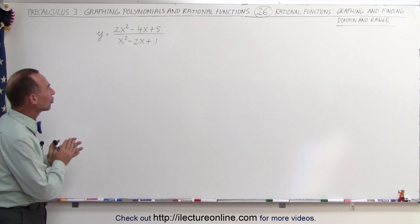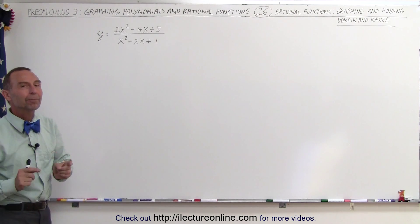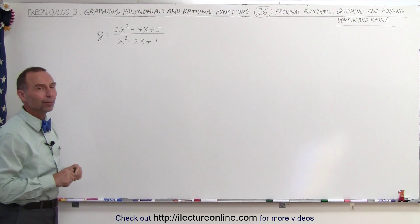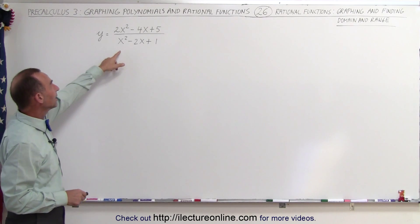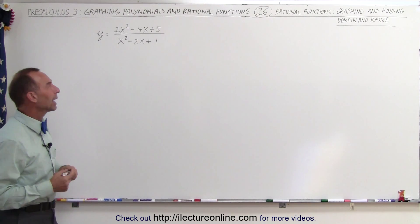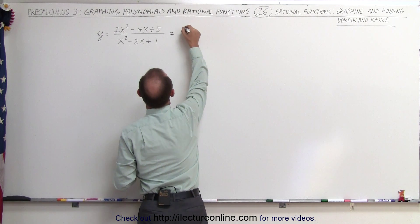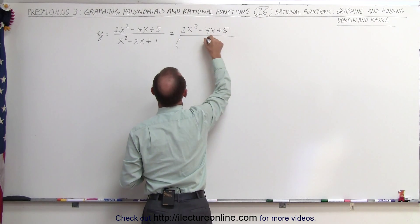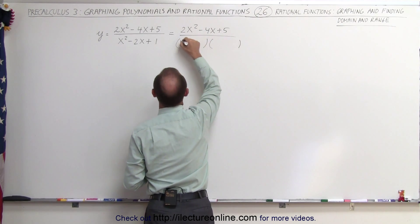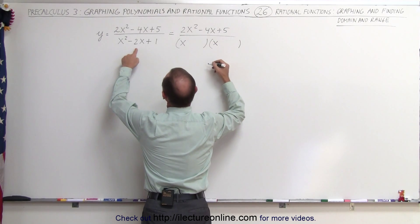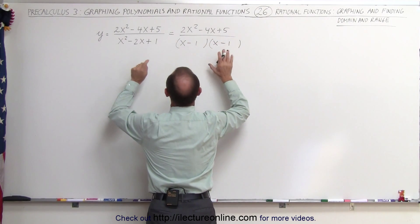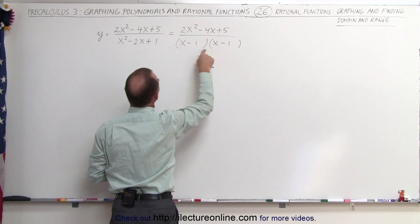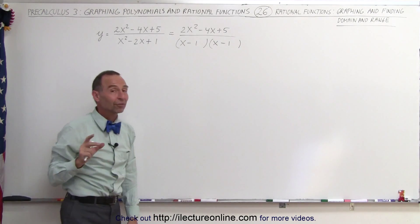The first step is to determine what x cannot be. We look at the denominator — there may be values that make it 0. To find those more easily, let's factor the denominator. We get (x minus 1)(x minus 1), because x times x gives x squared, and minus 1 times minus 1 gives plus 1, while the cross terms add up to minus 2x. So the factoring is correct.